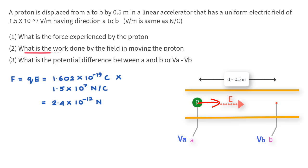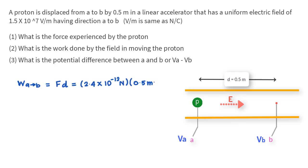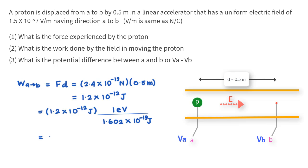The next question: what is the work done between A and B? Since the force is constant and acting in the direction of displacement, W from A to B equals force times displacement, which equals 2.4 × 10⁻¹² newtons × 0.5 meters. This comes to 7.5 × 10⁶ electron volts, which equals 7.5 million electron volts.